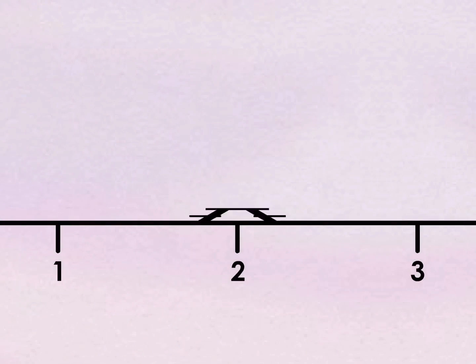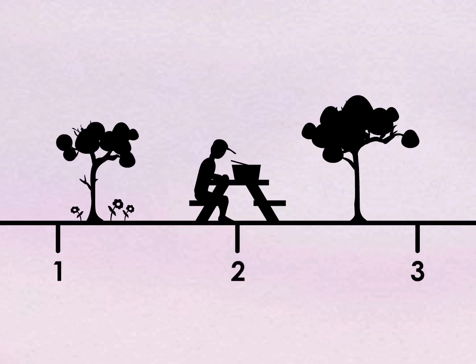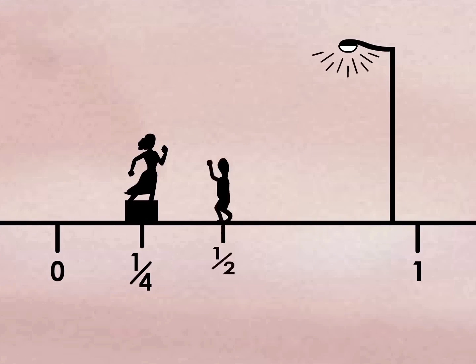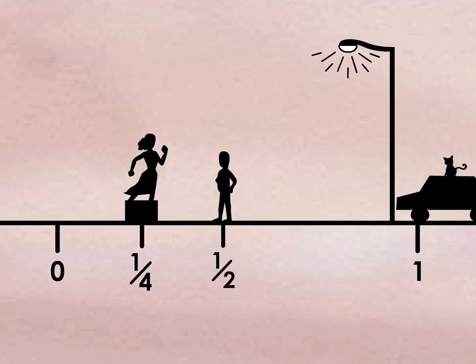We live in a world that says the number two sits on the number line between one and three. And I say to you today, the number one-half sits on the number line between one-quarter and four-fifths.